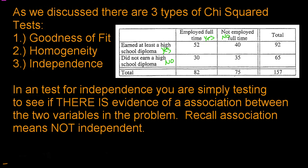You're always going to see some numbers. We did a sample of 157 people. We asked them these two different questions, and this is the result of what we found. Obviously, we see some different numbers here. Just because we see different numbers doesn't mean there is an association — the numbers are naturally allowed to be off a little bit, but if they're off too much, that's what could alert us that there is an association.